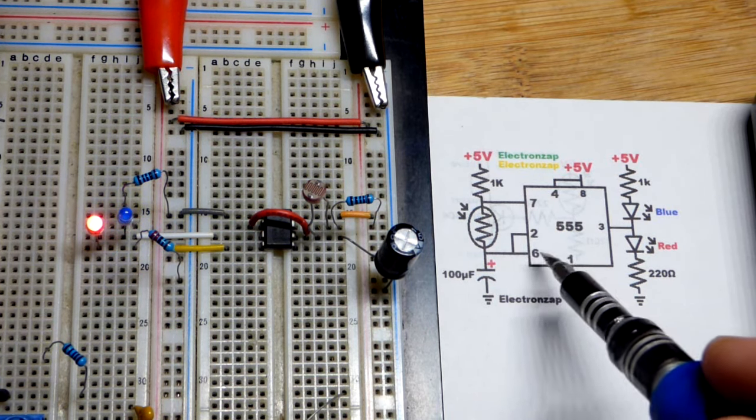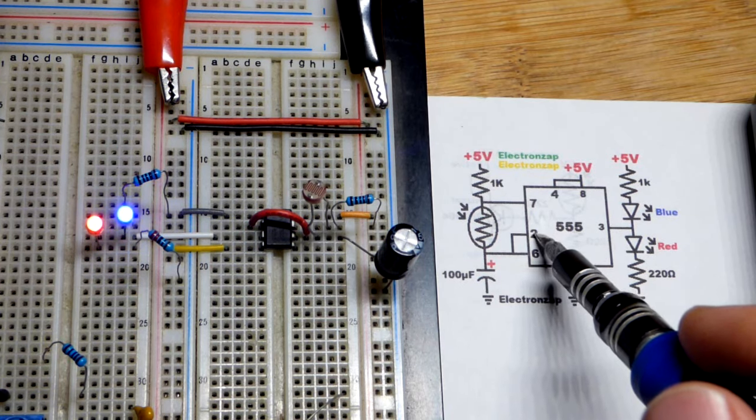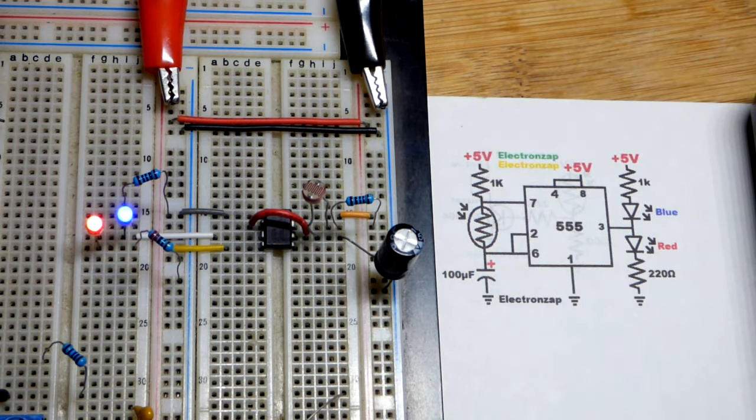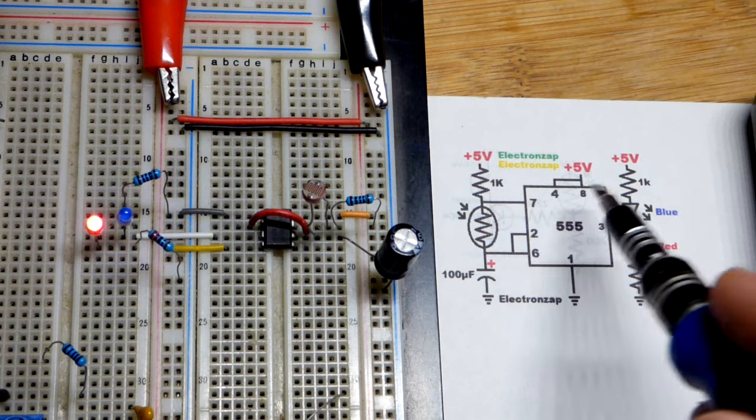Pin 2 and pin 6 monitor when it gets up to two-thirds supply voltage and down to one-third supply voltage, and switches the states. Basic 555 timer stuff.